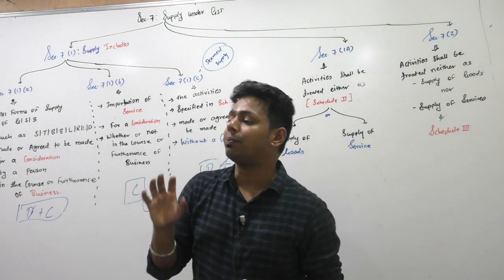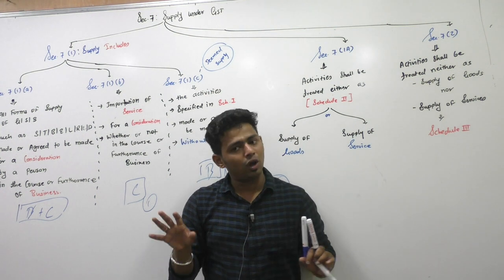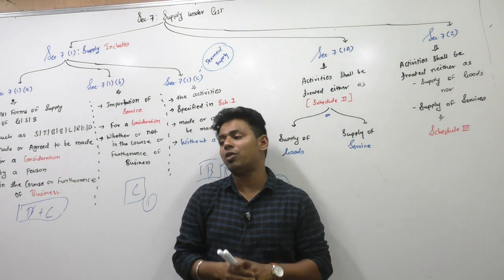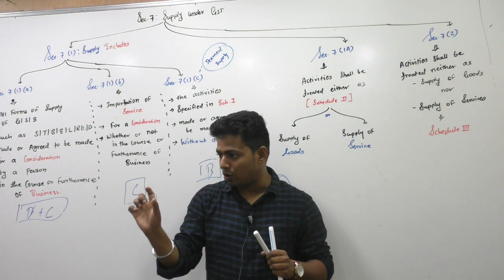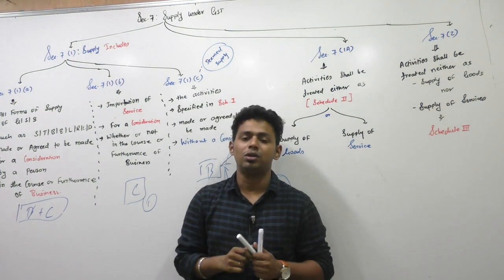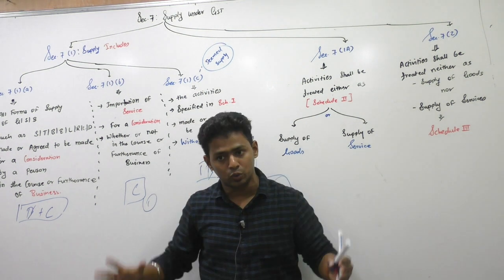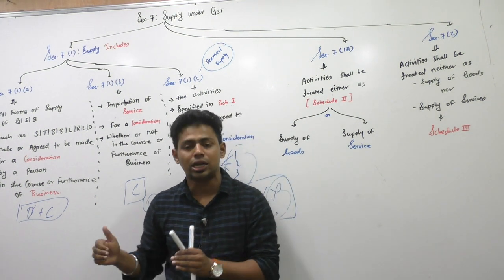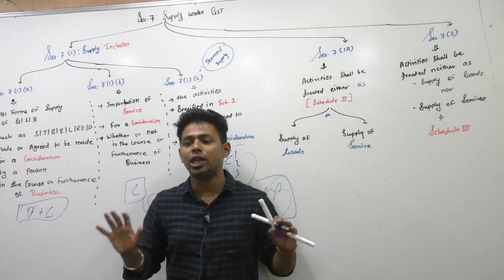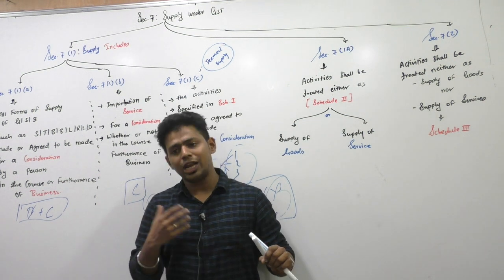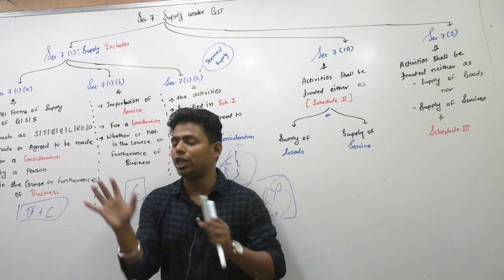Only 4 activities are there which can be treated as supply even without consideration. Section 7(1)(a) — in case of confusion where both goods and service components are there, please refer to Section 7(1)(a). Section 7(1)(a) has already prepared Schedule 2. Schedule 2 has divided activities either as supply of goods or supply of service to reduce litigation and confusion. Logically it will be service, and they have written legally it is service — so there is no fight now.